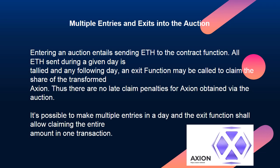Multiple Entries and Exits into the Auction. Entering an auction entails sending ETH to the contract function. All ETH sent during a given day is tallied, and the following day an exit function may be called to claim the share of the transformed Axion. Thus there are no late claim penalties for Axion obtained via the auction. It's possible to make multiple entries in a day, and the exit function shall allow claiming the entire amount in one transaction.